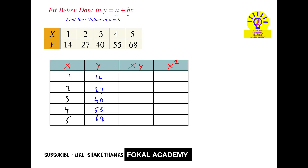Next, the xy column means the product of x and y values. The corresponding values are: 1 × 14 = 14, 2 × 27 = 54, 3 × 40 = 120, 4 × 55 = 220, and 5 × 68 = 340. Next, the x-square values: 1², 2², 3², 4², 5² — giving 1, 4, 9, 16, 25.